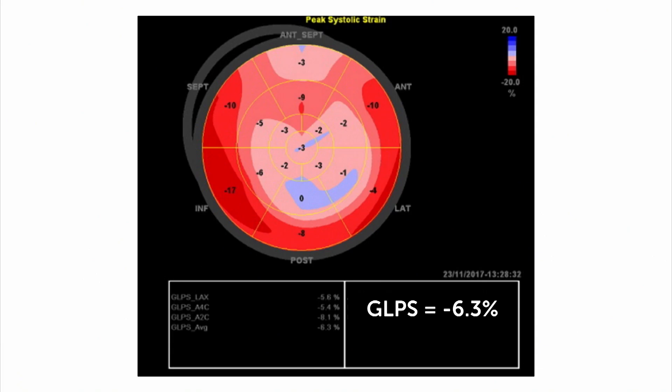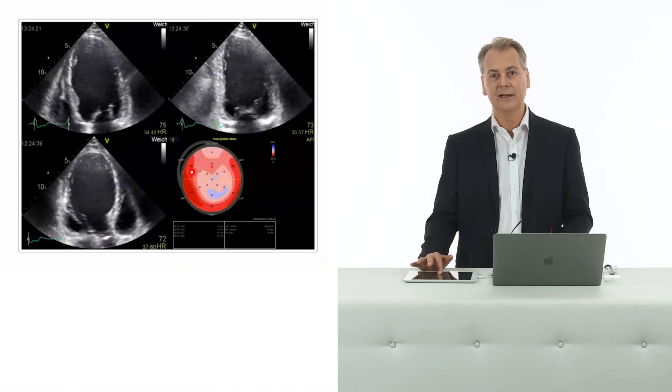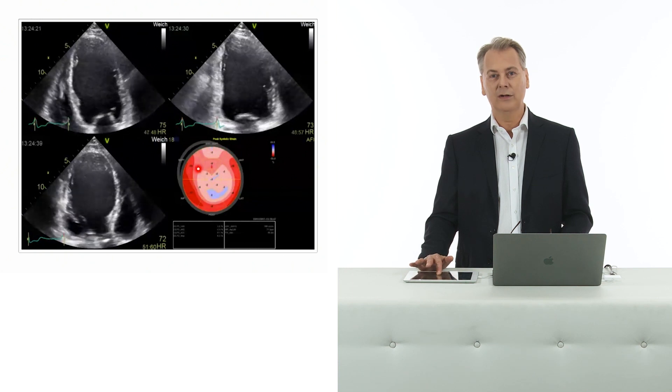Can we pick up these regional differences? Well, yes we can. Here is the bullseye display, and exactly what we see with our eye and with the coronary angiogram, we can confirm here: there is a reduction in strain specifically at the apex and the anterior wall as well as the septum.